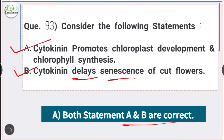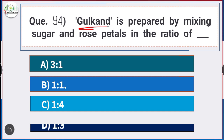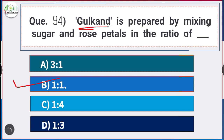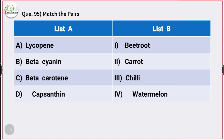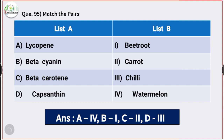Question number 94: Gulkand is prepared by mixing sugar and rose petals in the ratio — answer option B — 1:1. Question number 95: Match the following. Lycopene is present in watermelon. Beta-cyanin is present in beetroot.